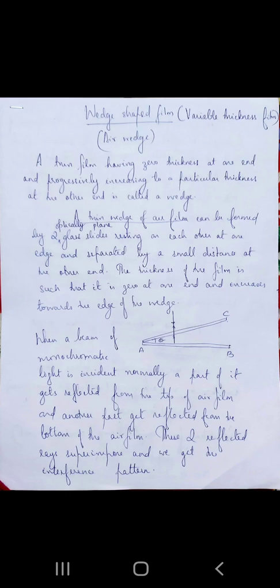In the last two sessions we were dealing with interference in thin films due to reflected and transmitted light. In both those cases we considered plain parallel thin films, where the thickness of the film was constant throughout. In today's session we are going to deal with wedge-shaped film, that is films having variable thickness.